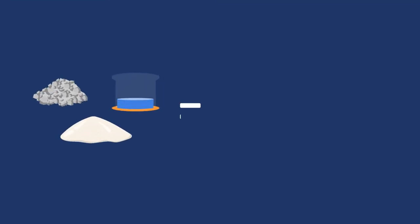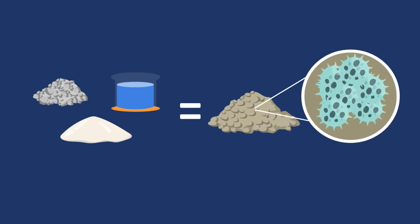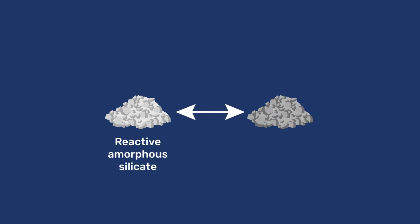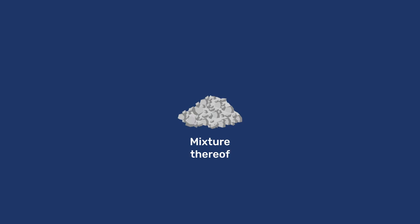By definition, pozzolans are materials that react with calcium hydroxide and water to produce a hydrated phase. Their chemically active compounds are reactive amorphous silicates or aluminosilicate glasses or a mixture thereof.